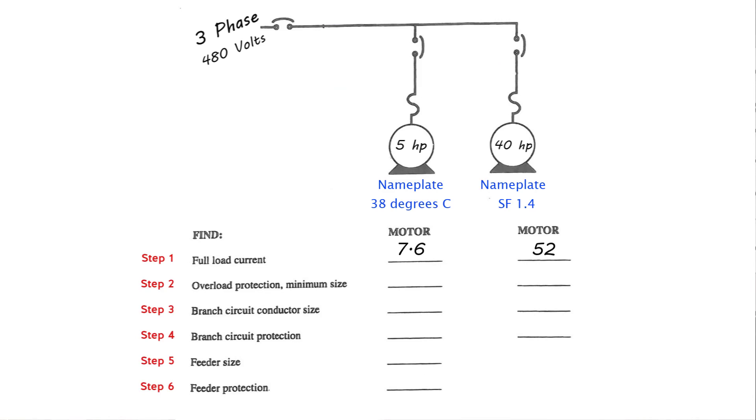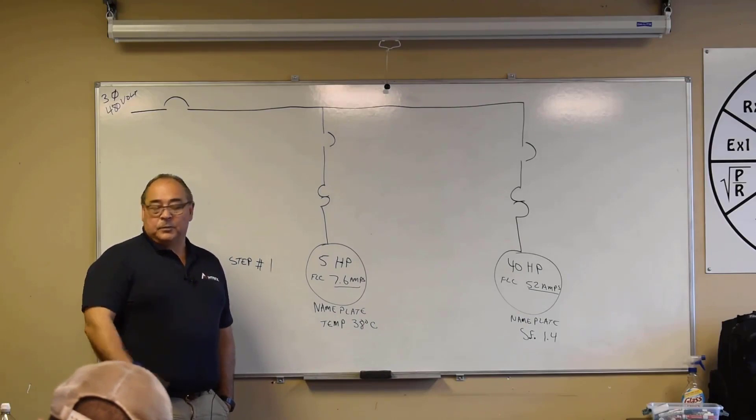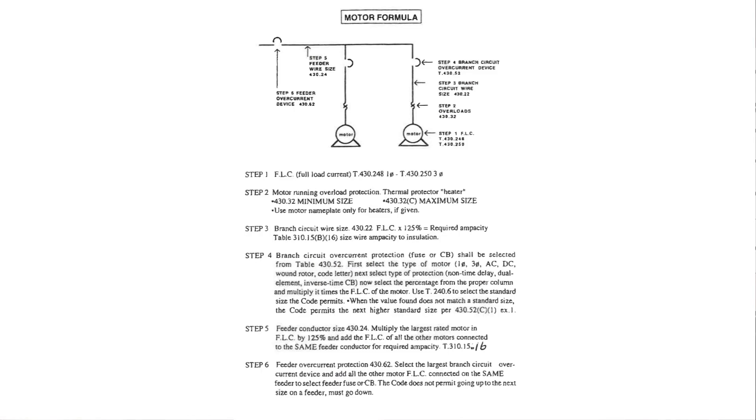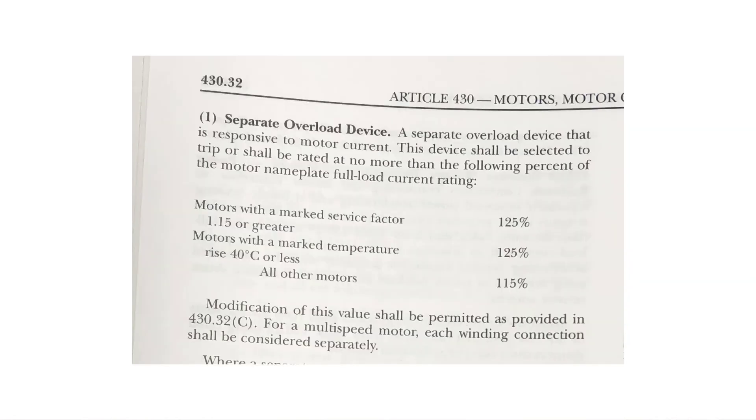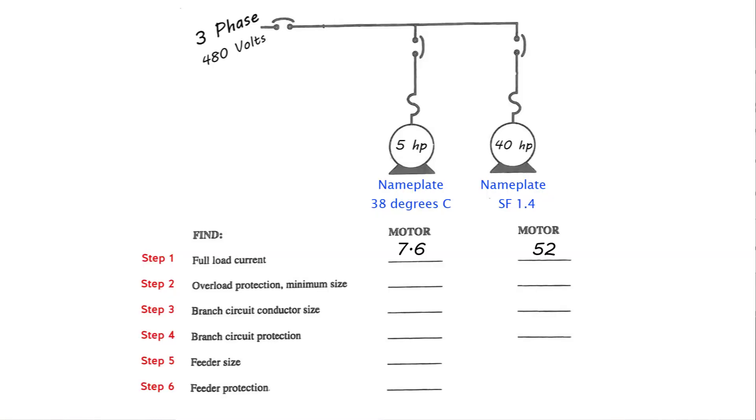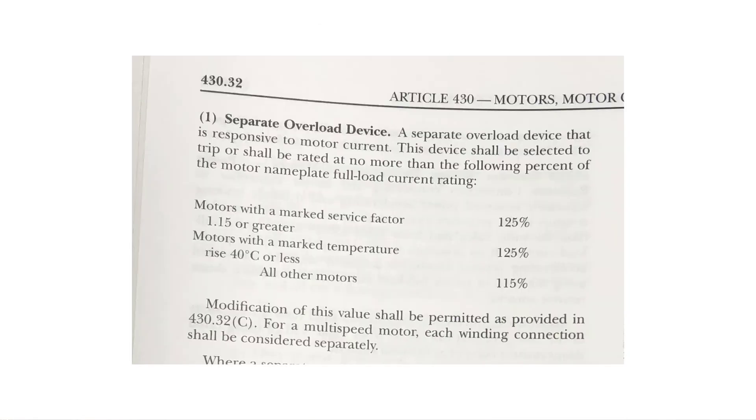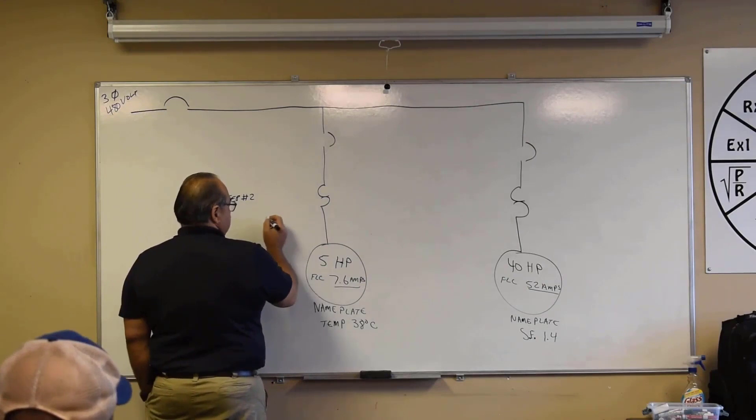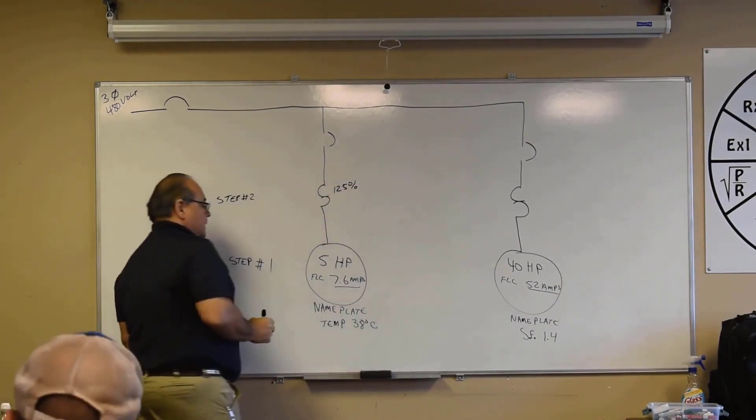Step number two talks about these overload relays or overload heaters, and we're going to use nameplate information for those. We're going to go to 430.32. Let's look for that. 430.32. On this five horsepower motor, we've got the nameplate rating, it says we got temperature of 38 degrees Celsius. What's our percentage we're going to use for that? Let everybody get to the right page. You are correct, 125 percent, because we've got a temperature rise of 40 degrees C or less, right? 38 degrees C is less than 40. So on this one it's going to be 125 percent. What's 125 percent of the FLC, right? So 125 percent times 7.6 equals what? 9.5 amps.